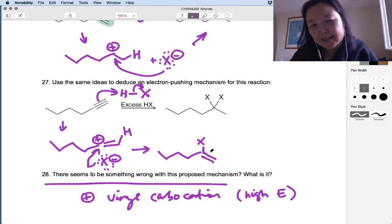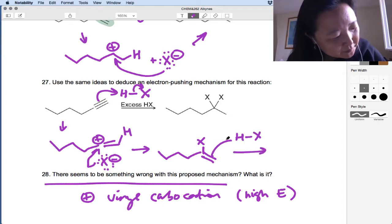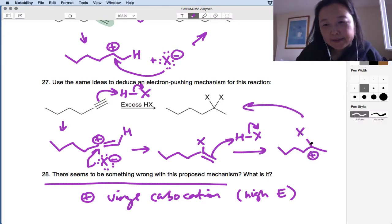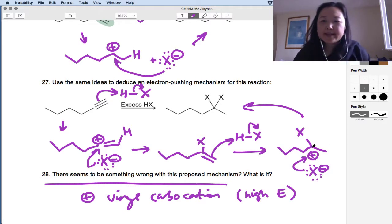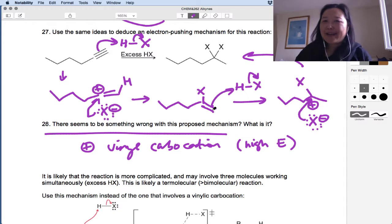But let's go ahead and finish this off. If that wasn't a problem, what would we have? Well, you'd expect it to just go along the same way. And we would end up with a positive charge here. Again, secondary being better than primary. And then we're going to have the last X come on over and attack at that carbon right here. So you end up with the X's on the same carbon because that's the Markovnikov position. But the mechanism doesn't quite seem right.